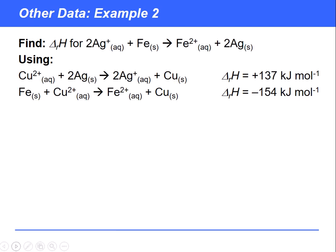Let's have a look at another example - a displacement reaction where silver ions react with iron to make Fe²⁺ and silver. We've got some data we can use. We write out the equation: Fe²⁺ is formed and 2 Ag. This is the enthalpy change we're trying to find.